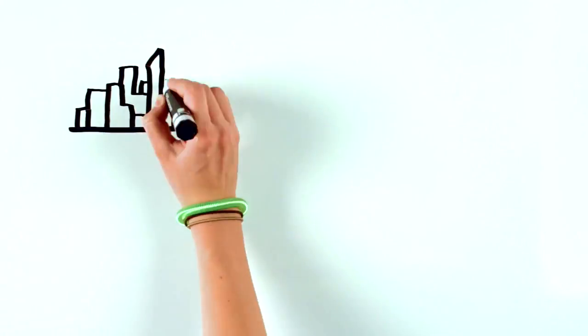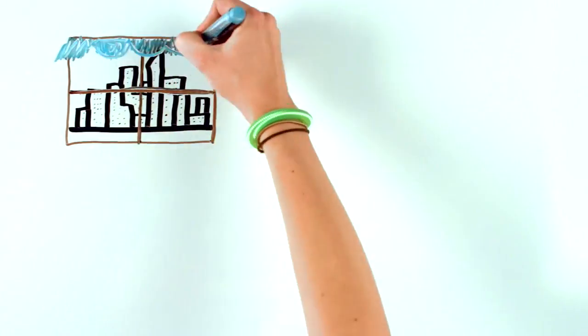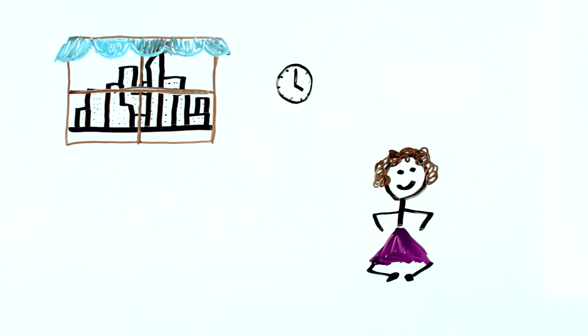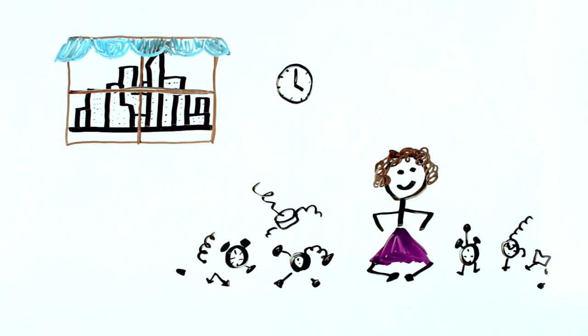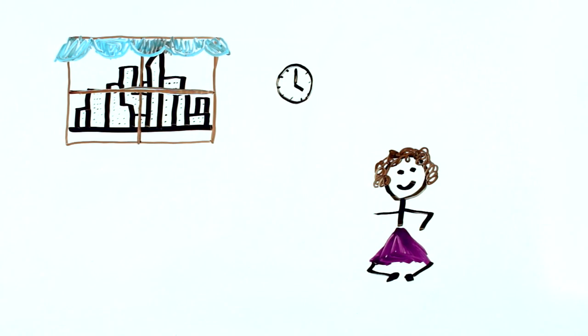Grace was born in New York City in 1906. She was a curious child and, at age seven, she decided to see how an alarm clock worked. She took apart seven clocks before her mother figured out what she was doing and took away six. She did let Grace continue to investigate one.